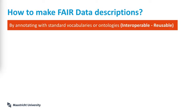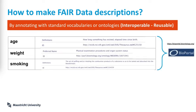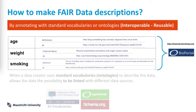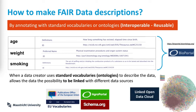So how do we make FAIR data descriptions? By annotating those descriptions with standard vocabularies or ontologies, making the variables interoperable and reusable. Take these three variables — instead of manually describing what is age, what is weight, what is smoking, I would go to a vocabulary portal and search for a relevant definition of those variables and copy that identifier so that the definition gets reused and is findable through the web. When a data creator uses standard vocabularies or ontologies like schema.org, European vocabularies, and hundreds of others to describe data, it allows the data the possibility to be linked with different data sources, and ideally be part of the linked open data cloud, where we can link all the research knowledge available in the world.